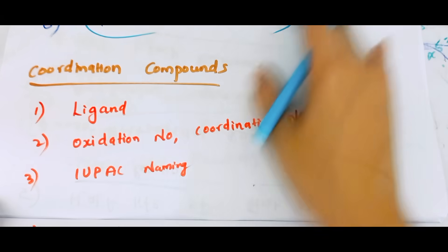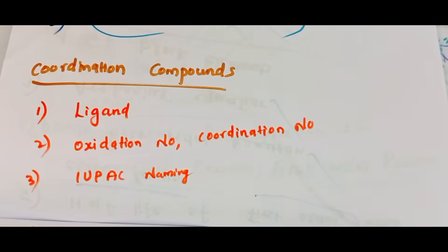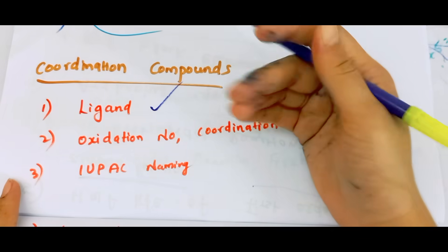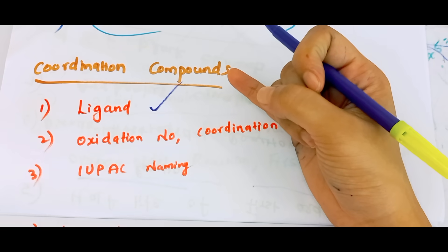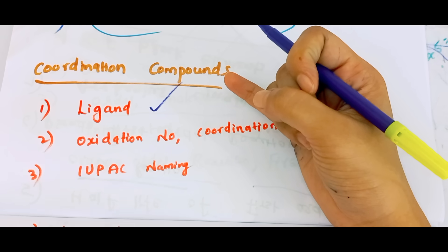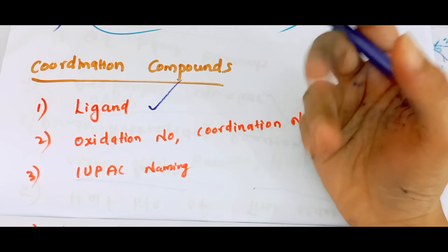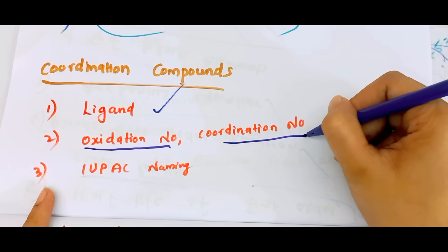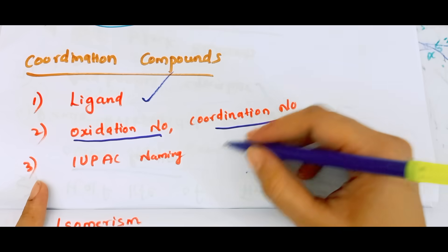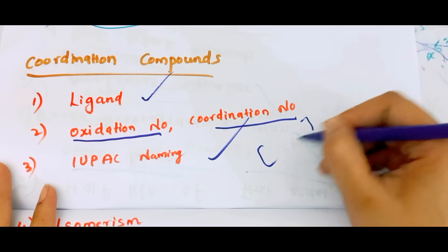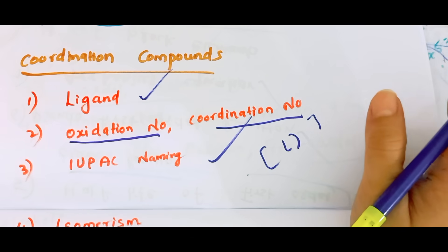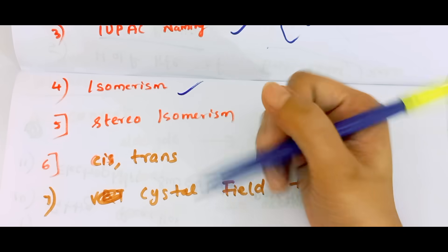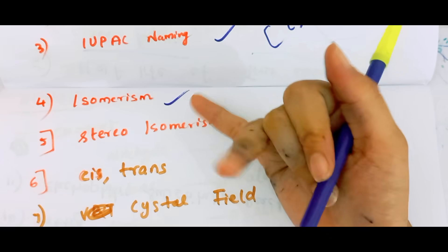Coordination compounds have a heavy weightage. In this chapter, there is a ligand — like monodentate, bidentate, ambidentate — those are the ligands. Oxidation and coordination number. IUPAC naming. IUPAC isomerism.